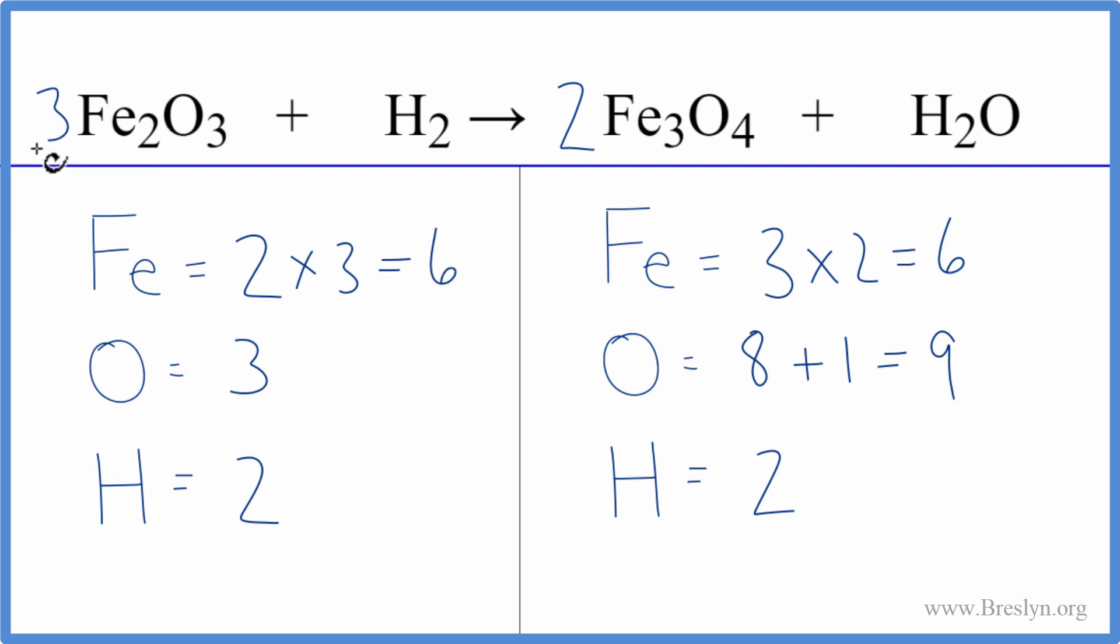I do need to update the oxygens because this three applies to everything. But three times three, that gives me nine. And now all of a sudden this equation is balanced.